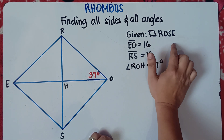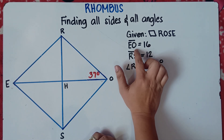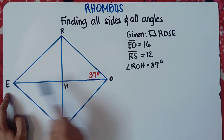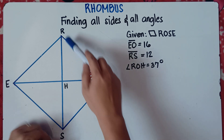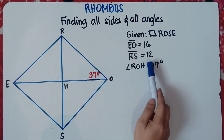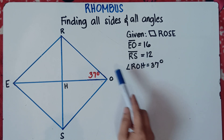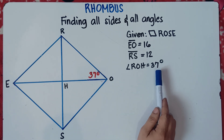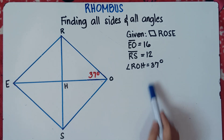We have a given rhombus. Line segment EO — that would be equal to 16. This EO is a diagonal and equals 16. Diagonal RS equals 12. And we have one given angle — angle ROH — that is equals to 37 degrees. We are told to find all sides and all angles.